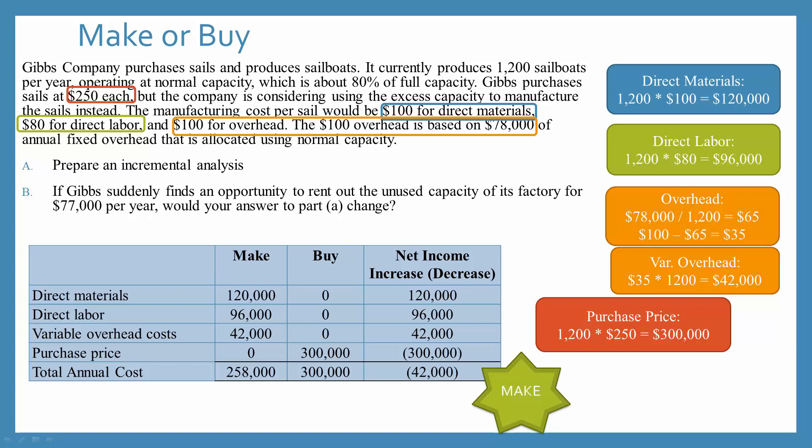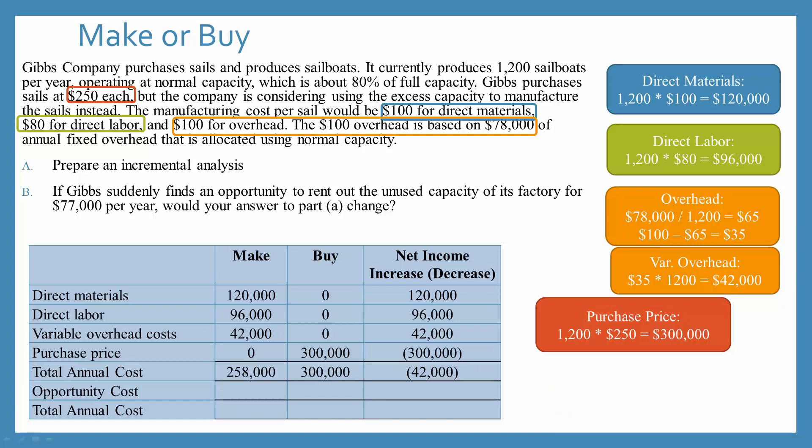But now if we read Part B, it says if Gibbs suddenly finds an opportunity to rent out the unused capacity of its factory for $77,000 per year, would your answer to Part A change? What they're telling us is that there's an opportunity cost. If they choose to make the sails, they cannot rent out the unused capacity for the $77,000 per year. So the cost of making includes this opportunity cost of $77,000. It goes in our make column because it's a cost we're going to have — basically, we're losing this opportunity.